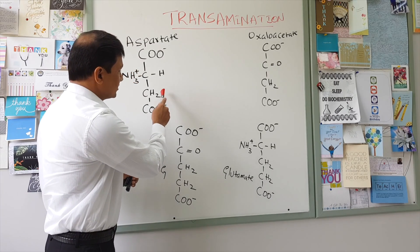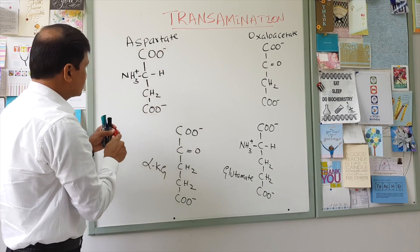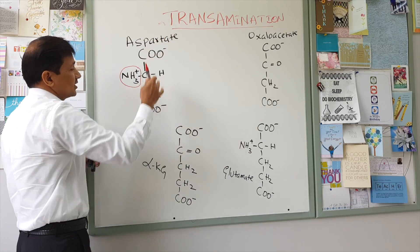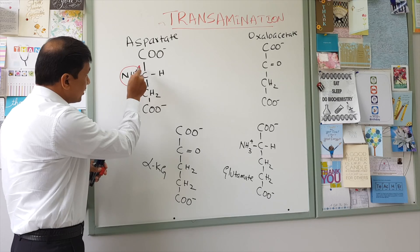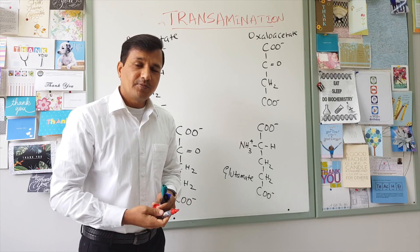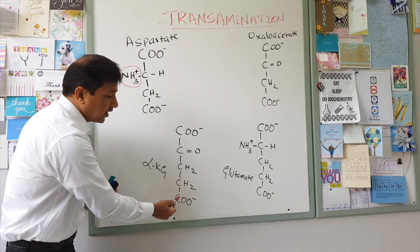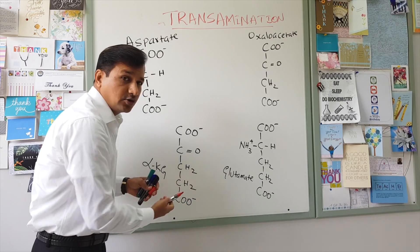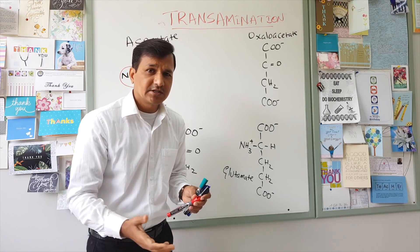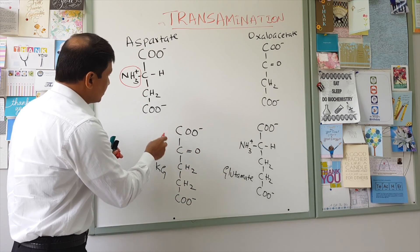Now if aspartate undergoes transamination reaction, it is going to give its amino group, because as the name says transamination means transfer of amino group. The amino group of aspartate has to be transferred to an alpha keto acid. The example of alpha keto acid here is alpha ketoglutarate, which is a TCA cycle intermediate. Alpha ketoglutarate has a keto group and it is going to receive this amino group.